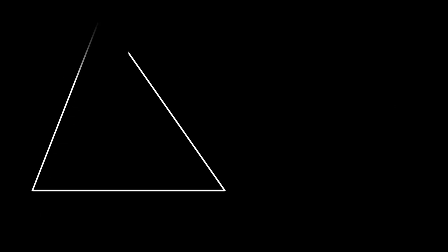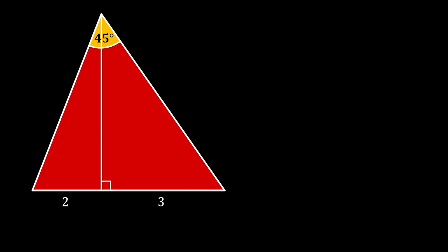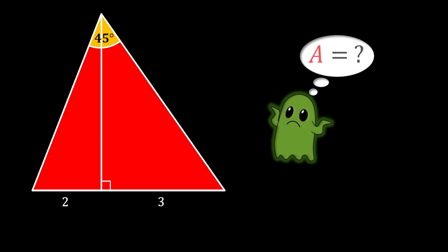We will start with a triangle with the angle at the top of 45 degrees. Then we will draw the height of this triangle so that it divides the corresponding base into two segments with the length of 2 and 3, as you can see on the sketch. The question is: can we somehow calculate the area of this triangle?